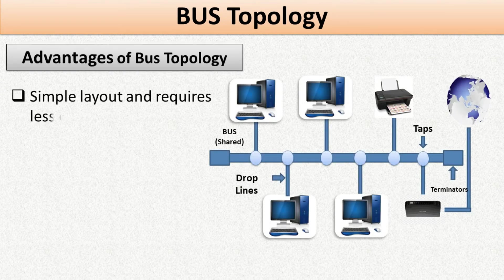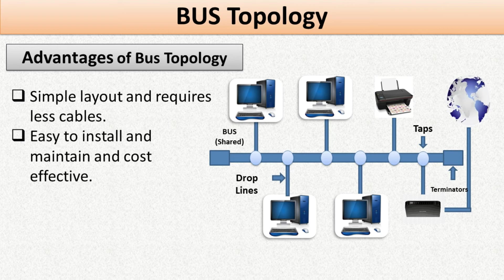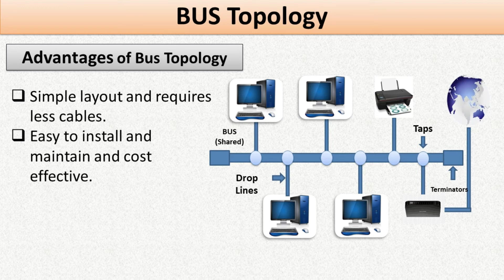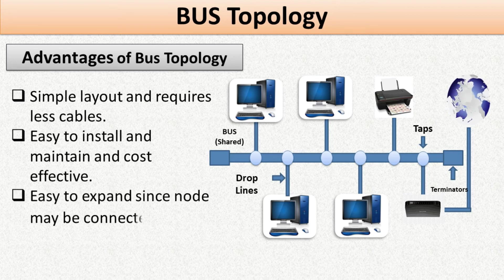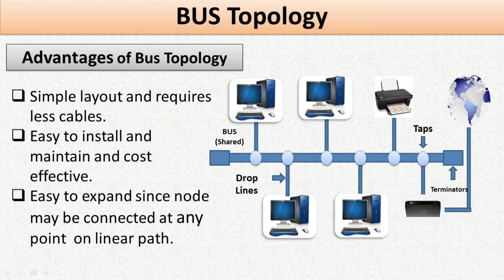Bus topology has a simple layout and requires less cable. It is easy to install, maintain, and cost effective — since bus topology requires less cabling, it is less expensive to implement compared to other topologies. It is also easy to expand, since a node may be connected at any point on the linear path. If I want to add more computers, I can easily add them to the shared cable.